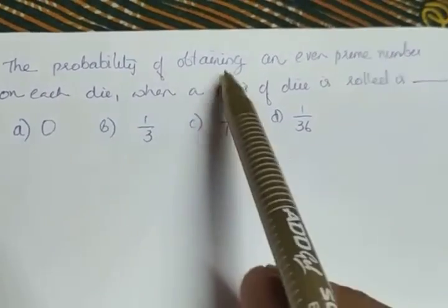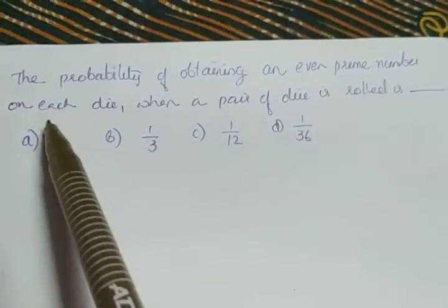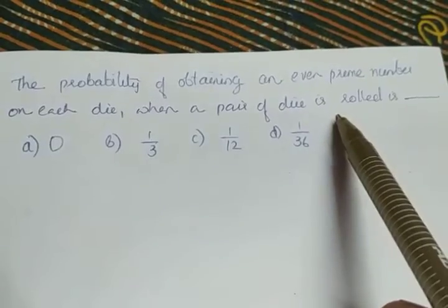The question is: the probability of obtaining an even prime number on each die when a pair of dice is rolled.